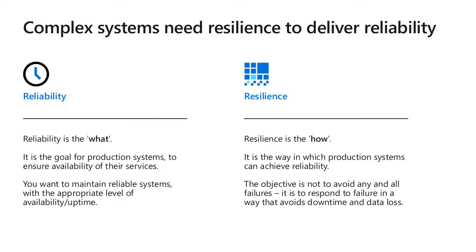There are two terms we need to define properly. First, reliability — this is essentially the what. This is the goal of your production system and what we commit to our customers. We want to tell users that this application will be available 99.99% of the time, which translates to a certain number of minutes or hours of downtime per year. This is essentially a promise to your customers that the application will be available a certain amount of time.